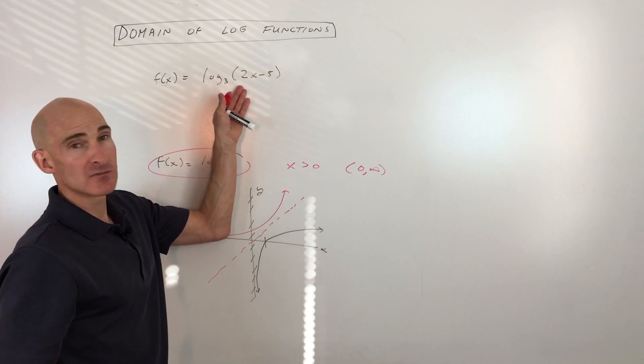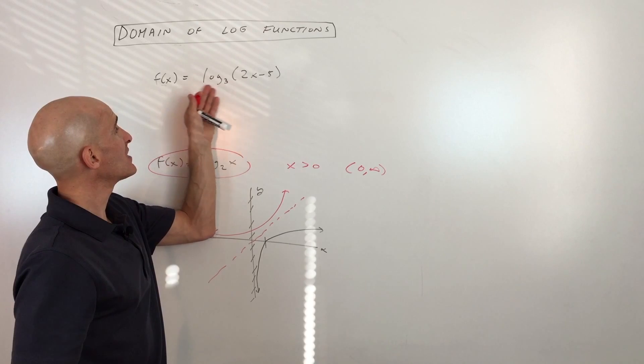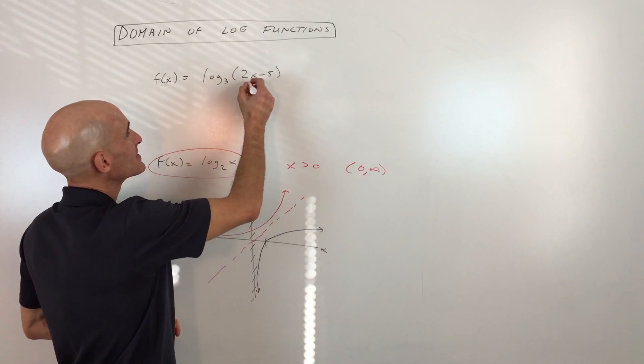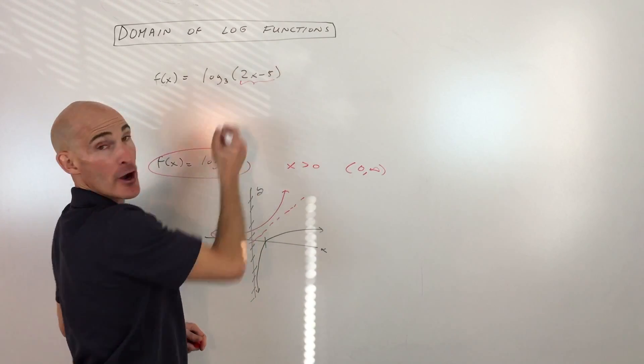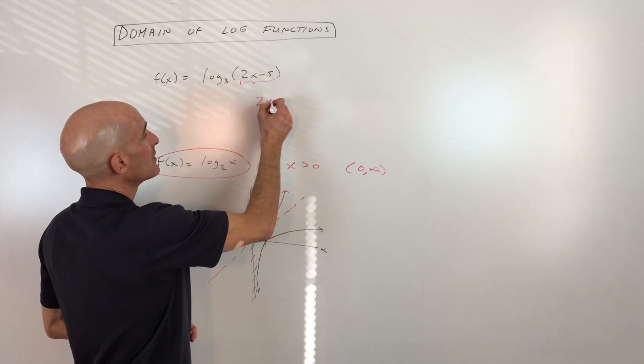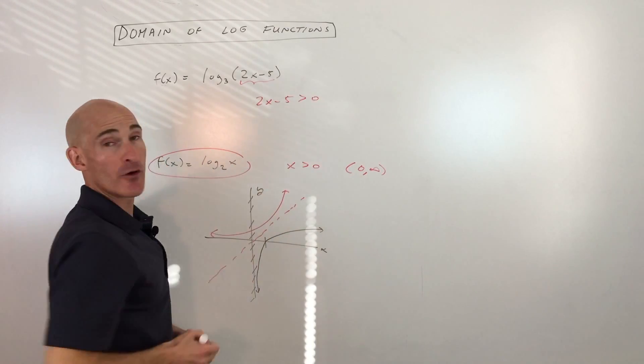Now, you might get into a little bit more challenging or complicated ones such as this, but all you would do is you would take this quantity right here, which is called the argument of the log, and you just make that greater than zero and solve for x.